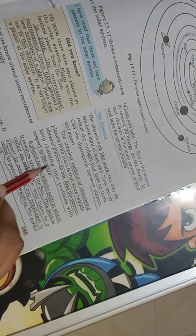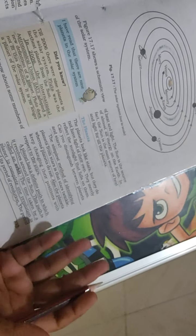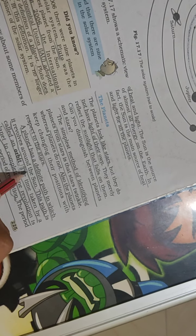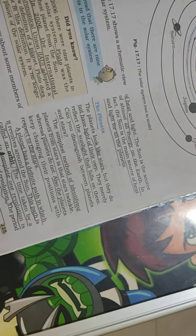The planet has a definite path in which it revolves around the Sun. This path is called an orbit.